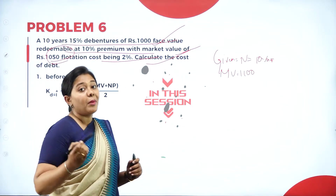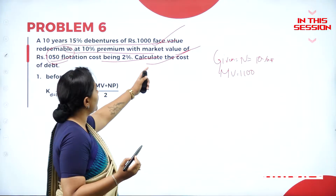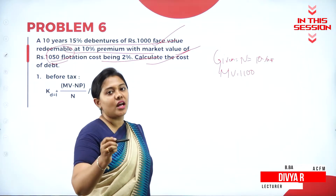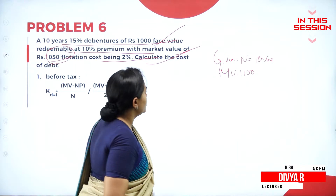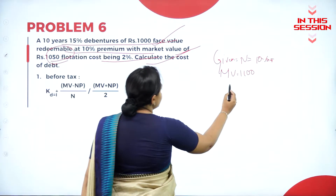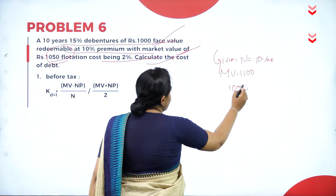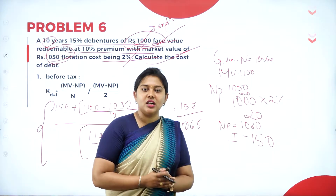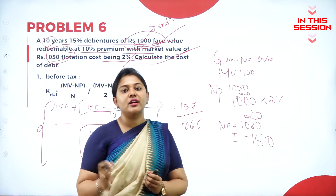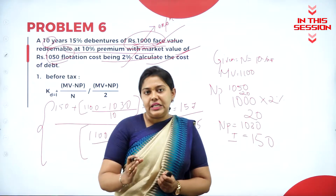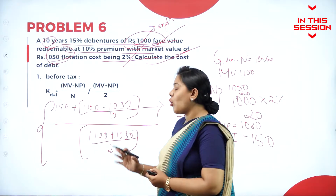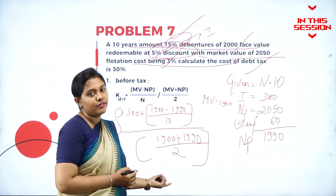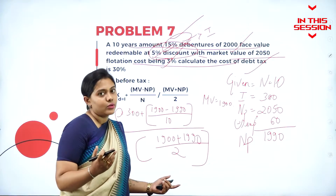Whenever face value and market value are both given, the net proceeds calculation should always consider the market value. So what is market value? It is 1050, and that is net proceeds. What are the expenses incurred? For that purpose you need to take up the face value. So whatever value you get, you have to divide it with the denominator value.